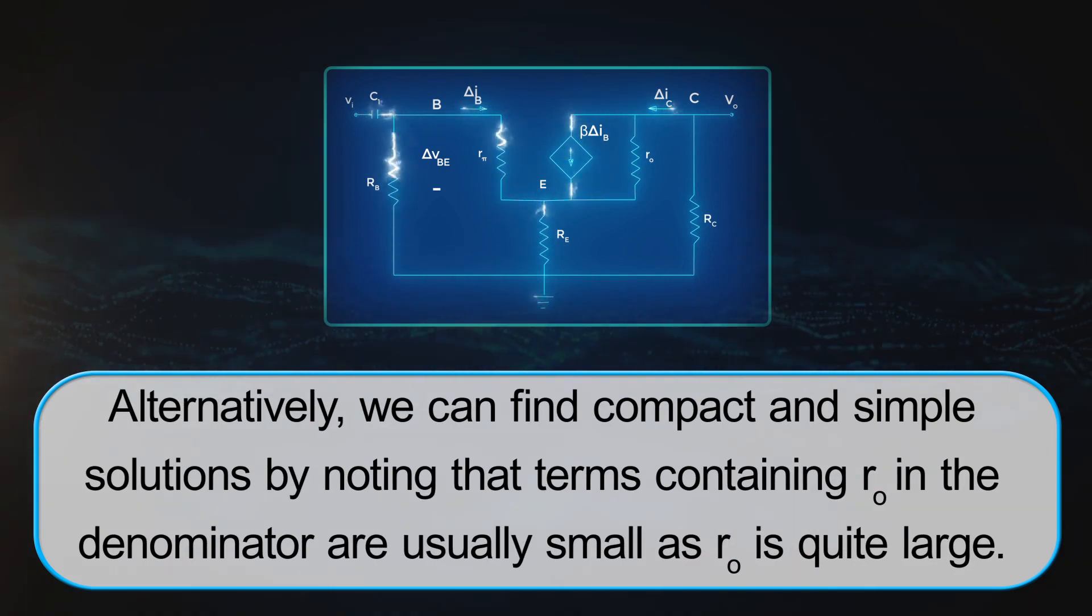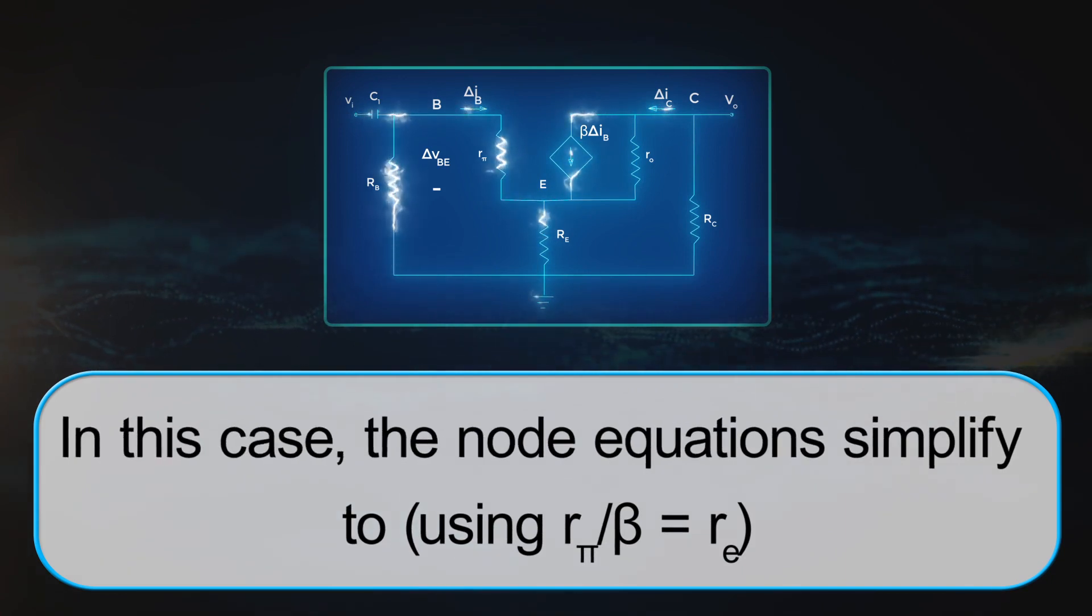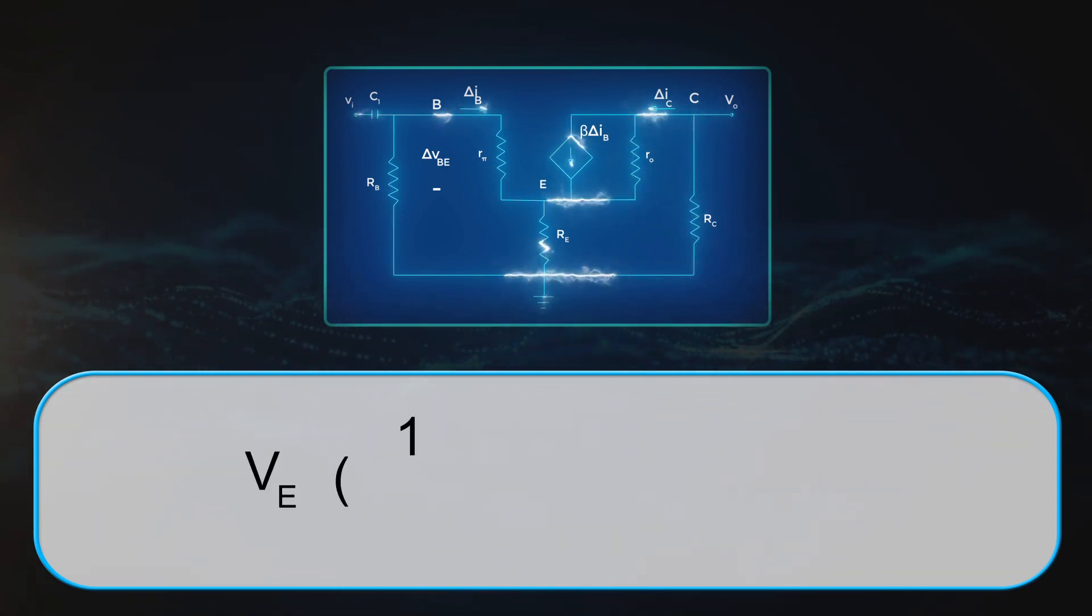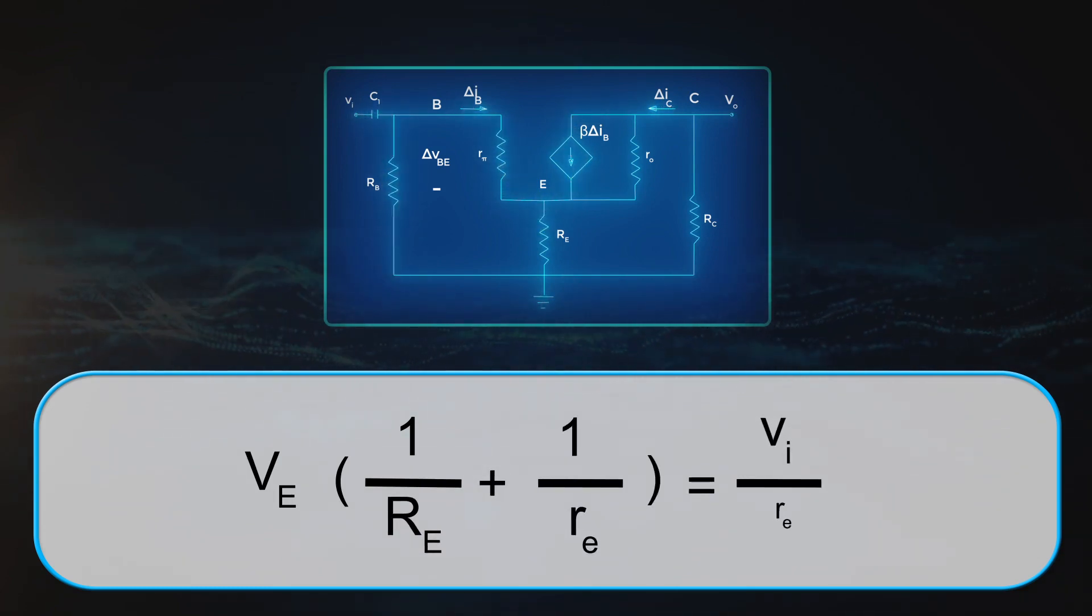Alternatively, we can find compact and simple solutions by noting that terms containing R0 in the denominator are equally small as R0 is quite large. In this case, the node equations simplify to: VE into 1 by RE plus 1 by RE equals to VI by RE. VE equals to RE into RE plus RE by VI.